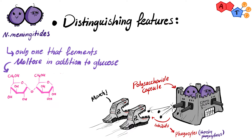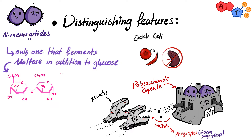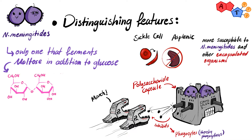Patients with sickle cell disease or asplenic patients — meaning they don't have a spleen — are more susceptible to Neisseria meningitidis infection, or any other infection with encapsulated organisms.